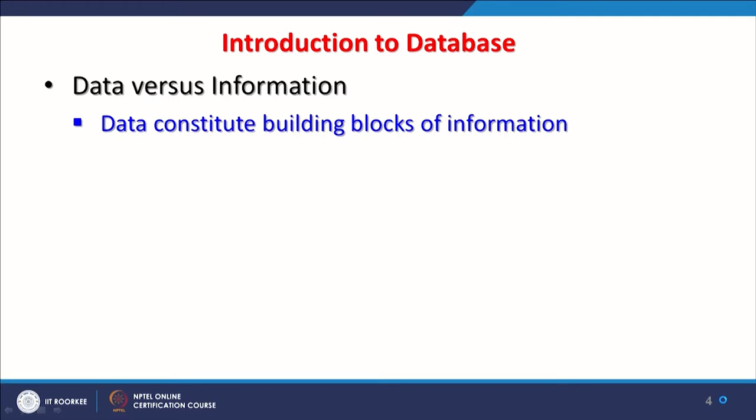First, regarding data versus information: data are the raw facts. When we organize these raw facts into a computer or database, we convert that data into information. GIS goes one step ahead — through GIS analysis, this information can be converted to knowledge. GIS is capable of handling not only raw facts but also allows us to convert data into information and finally into knowledge: what is there, how it is there, and how it will become after changes. Through prediction or modelling, we get a lot of insight about the data.